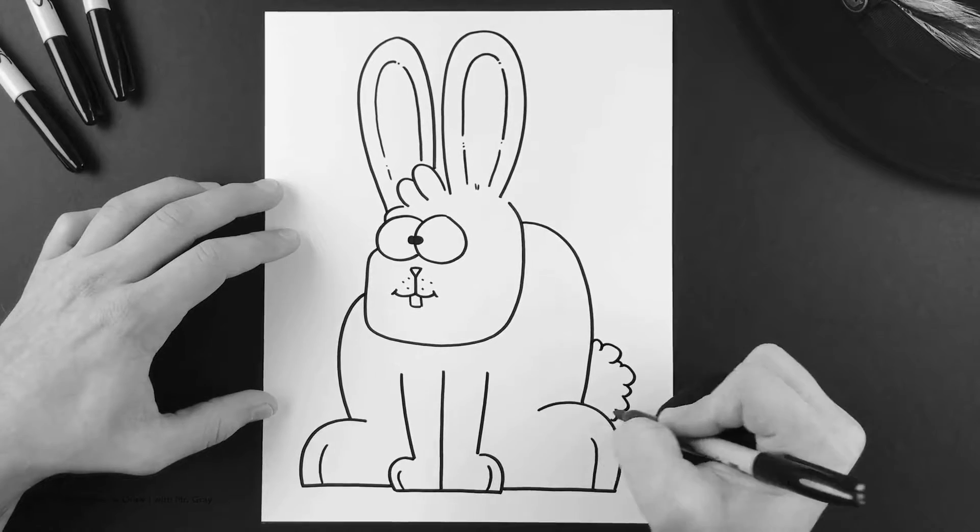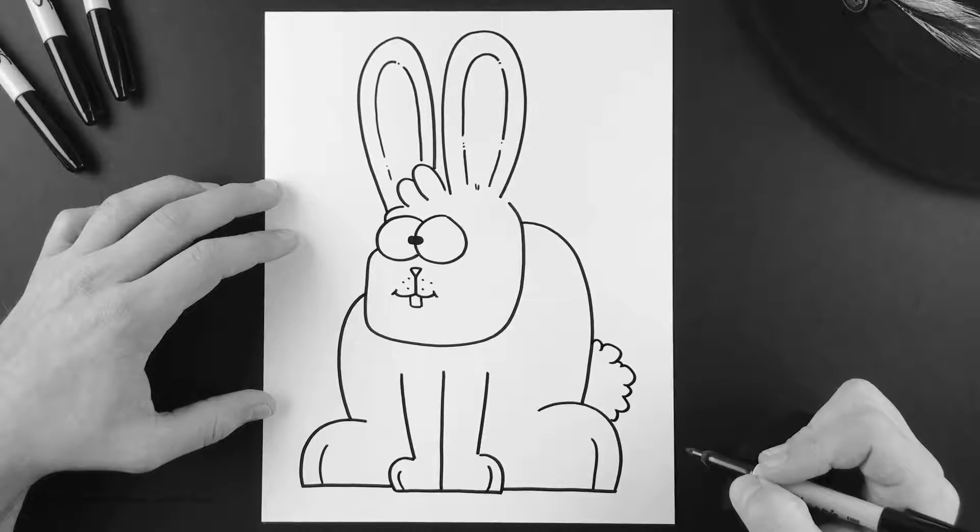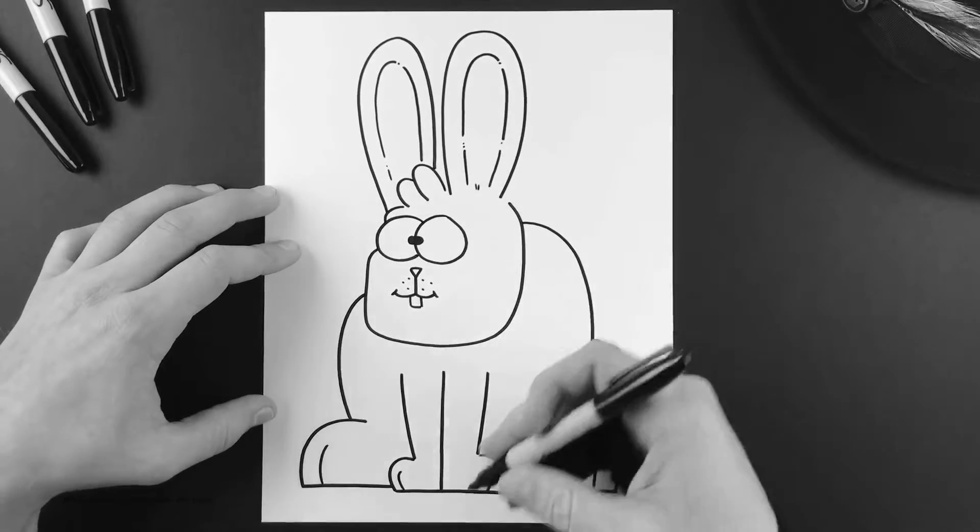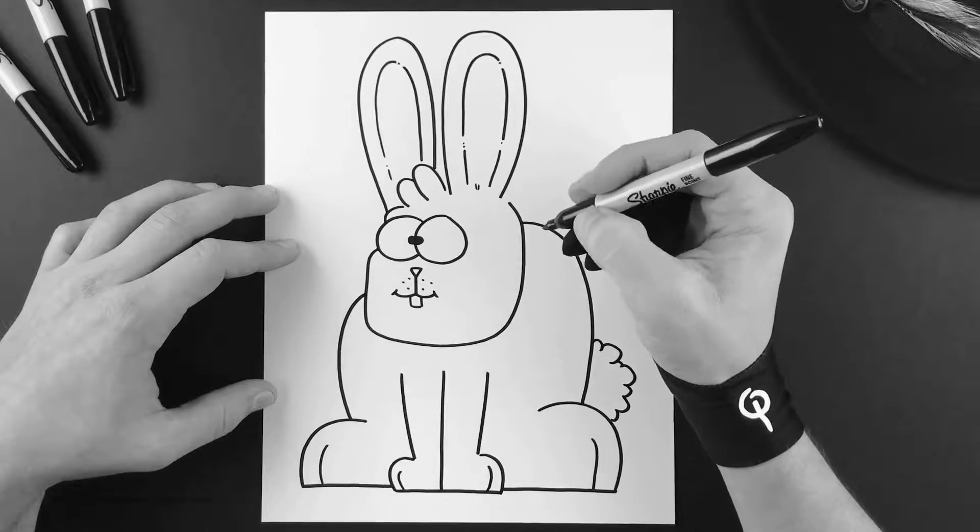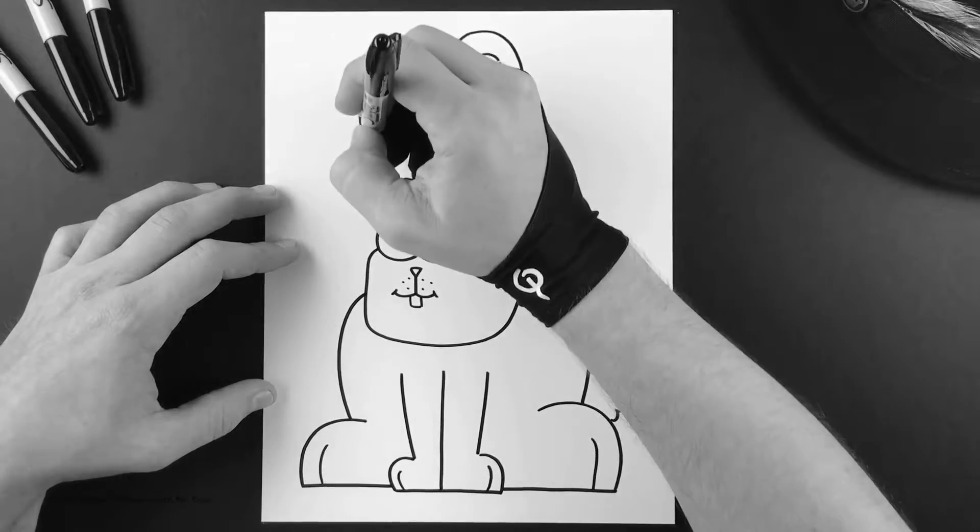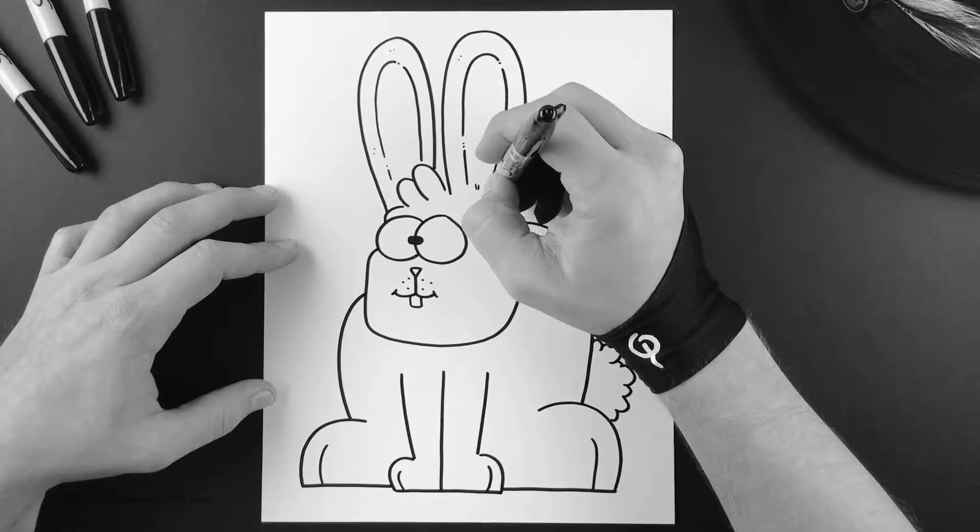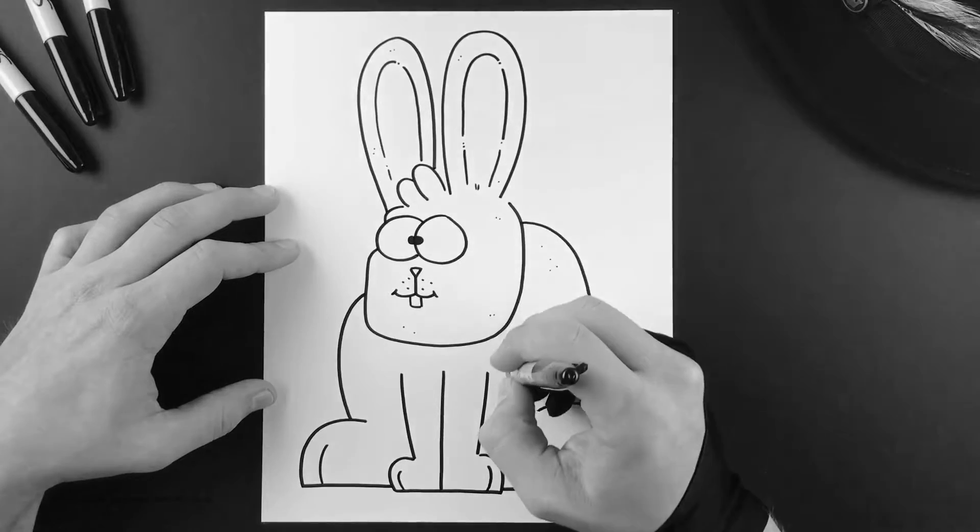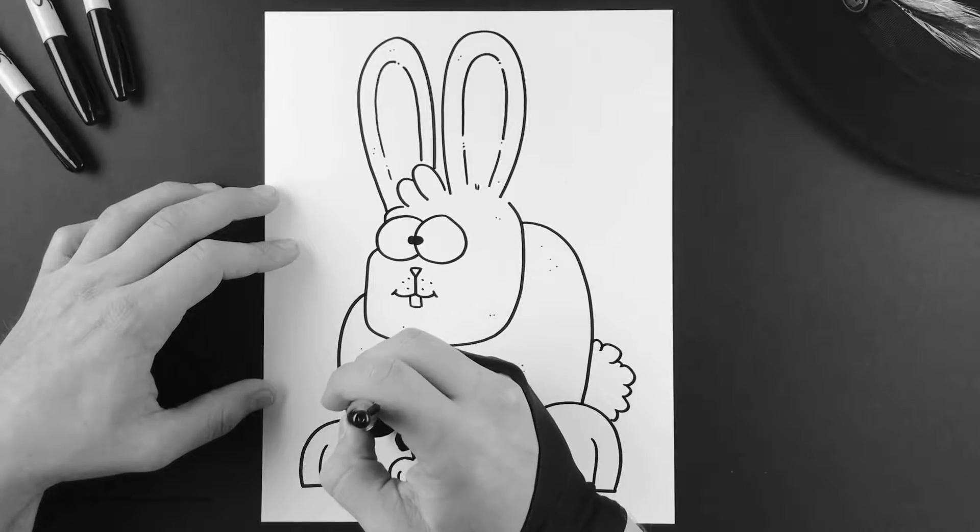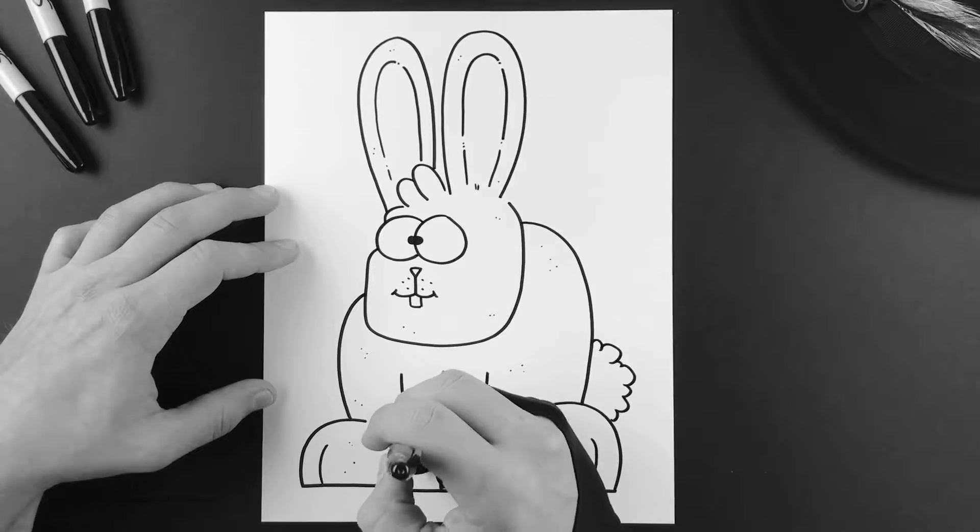Now what we can do is we can go back through and add a little bit of texture. So hold your marker vertical and place these little dots wherever you want. You can really add as many as you'd like.